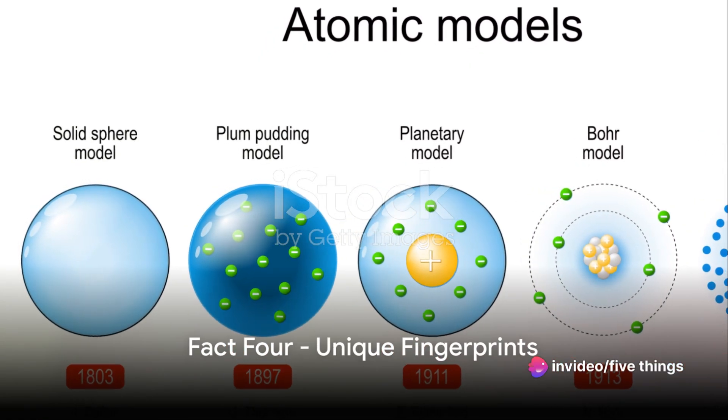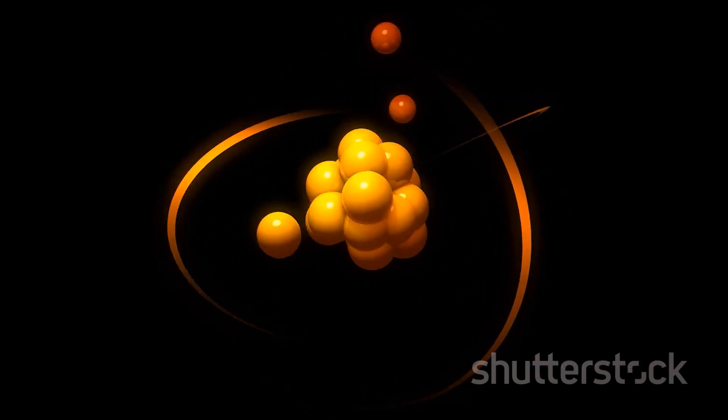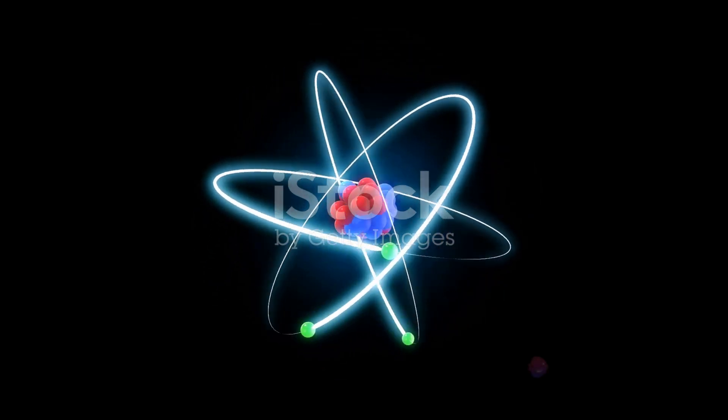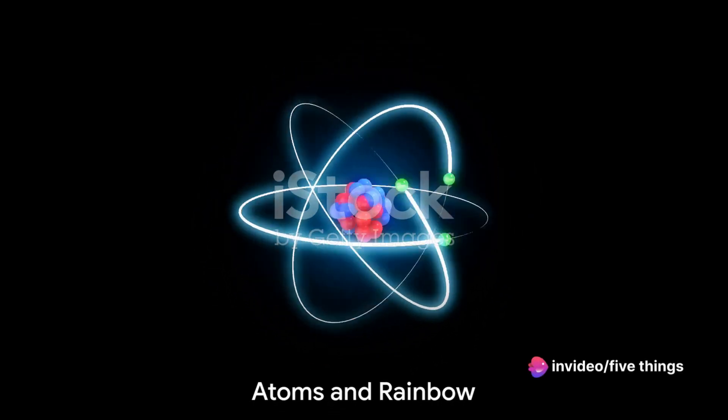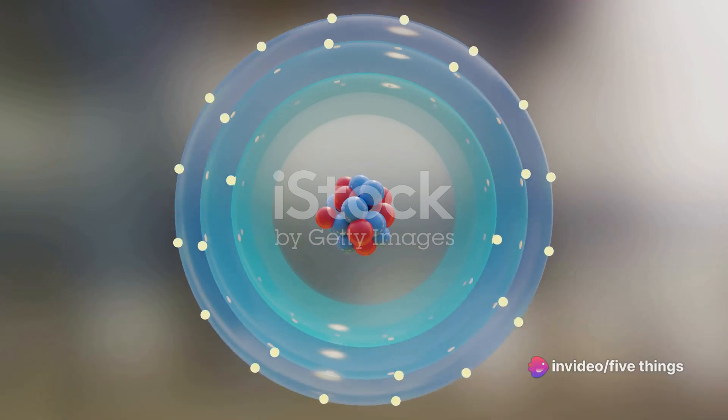Moving on to number four, atoms have their own unique fingerprints. Just as our fingerprints distinguish us, each atom emits a unique spectrum of light, giving elements their distinct identities. Next time you see a rainbow, remember, it's just atoms showing off their unique identities.